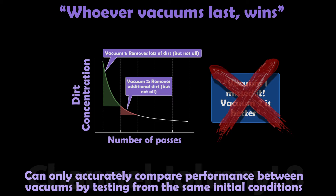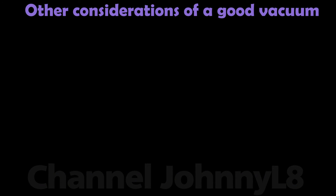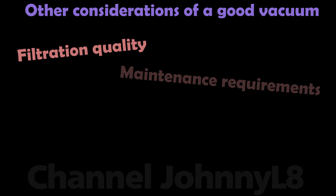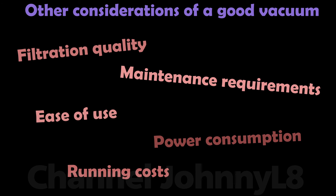No matter how good or convincing they may look, bedroom YouTube tests are just not good enough to conclude anything meaningful about a given vacuum's performance. Don't be fooled by YouTube demonstrations that try to show how good or bad a given vacuum cleaner is — at best they're just for entertainment, and at worst they can unfortunately be a form of propaganda. Many more factors should be considered in a good vacuum other than just its cleaning performance, such as filtration quality, maintenance requirements, ease of use, power consumption, running costs, and so on. It's the holistic performance that's often most important.